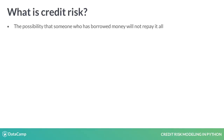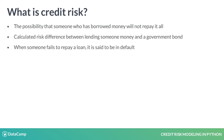What exactly is credit risk? Credit risk is the risk that someone who has borrowed money will not repay at all. Think of this risk as the difference between lending money to a person and purchasing a government bond. With government bonds, it's almost guaranteed to be paid back, but not when lending money to people.